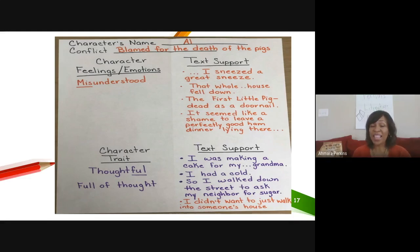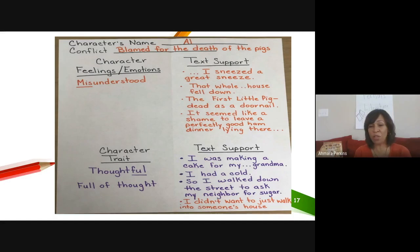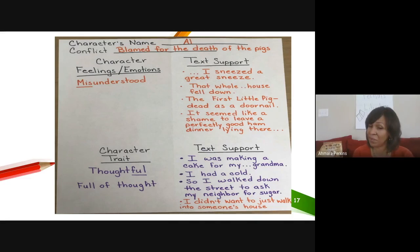For character trait — it stays the same as what I had yesterday. I was making a cake for my grandma, I had a cold, so I walked down the street to ask my neighbor for sugar. Today I was looking and I wanted to confirm I could describe him as thoughtful — full of thoughts. And in the text it said, 'I didn't want to just walk into someone's house.' That is another example of him being thoughtful.